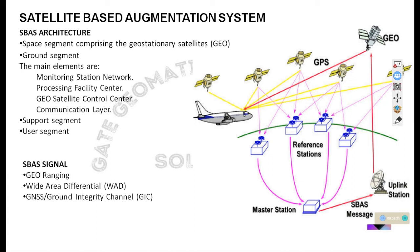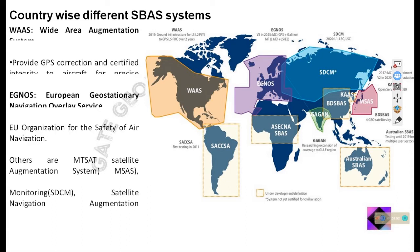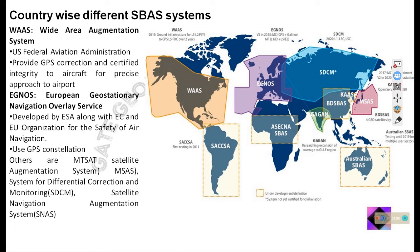This S-BAS system is implemented with different names in different countries. In the USA, the S-BAS system is named WAAS, the Wide Area Augmentation System. In European countries, it is the EGNOS system, the European Geostationary Navigation Overlay Service, developed by the European Space Agency, European Commission, and safety of air navigation organizations. There is clear involvement of airport authorities in the development of this S-BAS system, as it is mainly used for aircraft positioning and navigation.